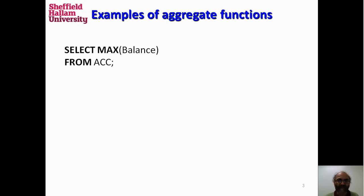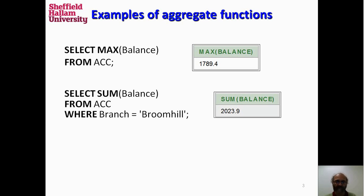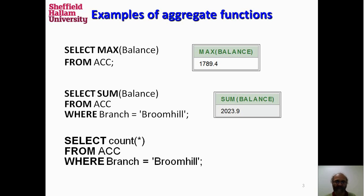Here are some examples of using aggregate functions. MAX gives you the highest value — here, the maximum balance in the account. SUM will add up all the values for balance, but we can use that with a WHERE clause to get all of the values for all of the balances in the Brewmill branch. And COUNT can also use the Brewmill branch, like this.